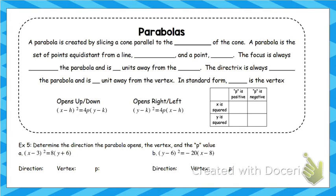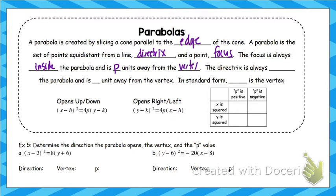Now let's transition to parabolas. You may have seen these in algebra 2. Parabolas are like quadratics, but today we're also going to look at parabolas that open side to side. As a conic, a parabola is formed by slicing the cone parallel to the edge. A parabola is the set of all points equidistant from a line and a point. That line is called the directrix, and that point is called the focus. The focus is always inside the parabola and is p units away from the vertex.